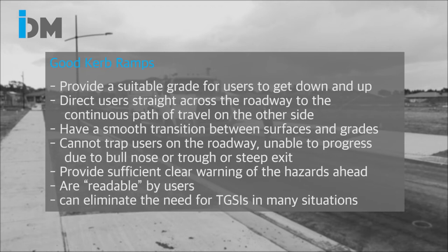When we're looking at good curb ramp design there's a whole lot of objectives we need to consider. We need to consider that it's a smooth grade up and down for users travelling both directions on a curb ramp. They need to direct users straight across the roadway to a continuous path of travel on the other side. They need to have a smooth transition between the surfaces and the grades.